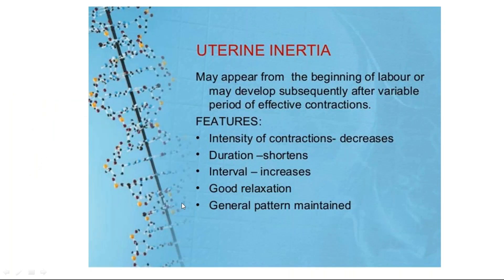Uterine inertia is hypoactive. It can be primary — present from the beginning of labor — or secondary, developing after a variable period of effective contractions, where you find either arrest of descent or arrest of dilatation. Features: intensity is reduced, duration of contractions is less, interval between contractions is increased, and there is very good relaxation. Normal polarity is maintained, but it is not effective. The patient feels less pain during contractions.